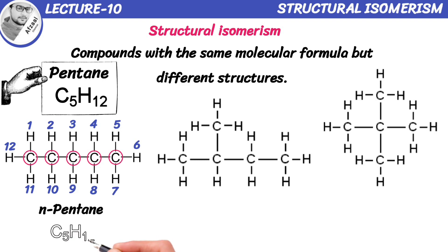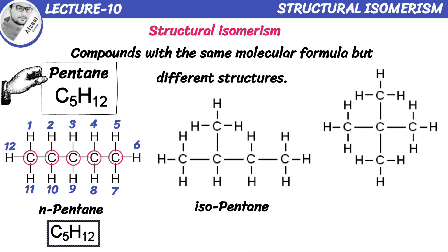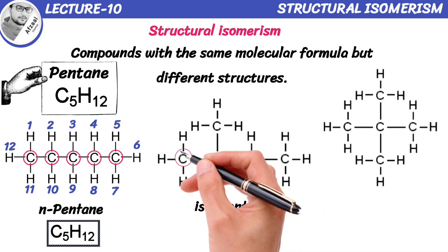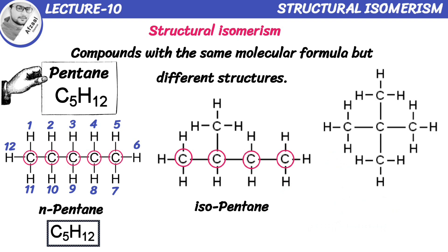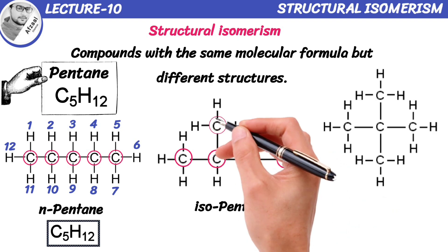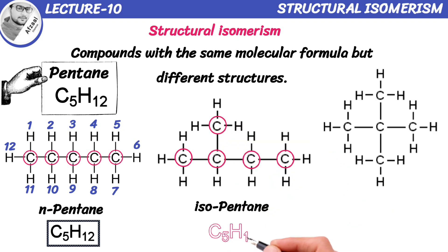Next, we have another structure of pentane: isopentane. This isomer has 4 carbon atoms in a row and 1 carbon atom branching off from the second carbon atom. Although the molecular formula of isopentane is still C5H12.